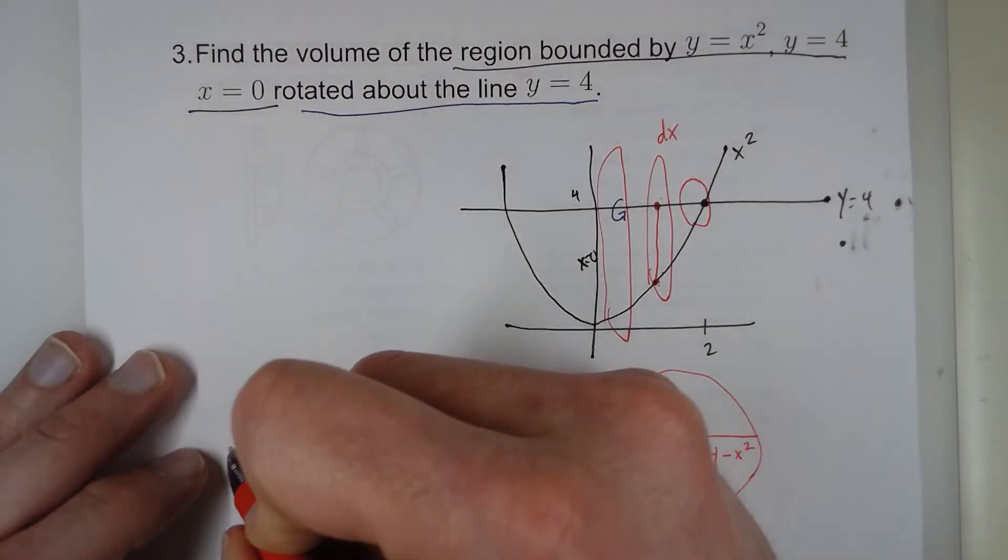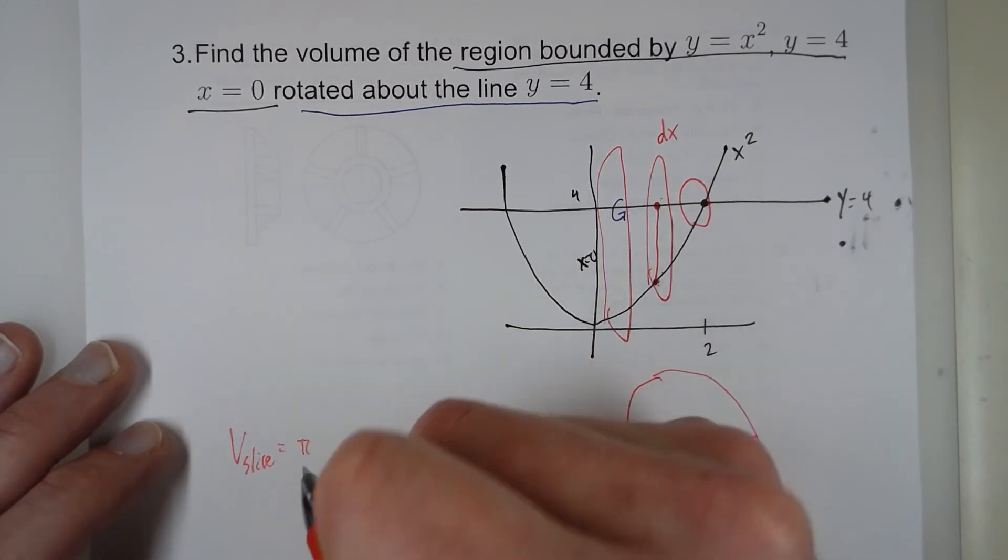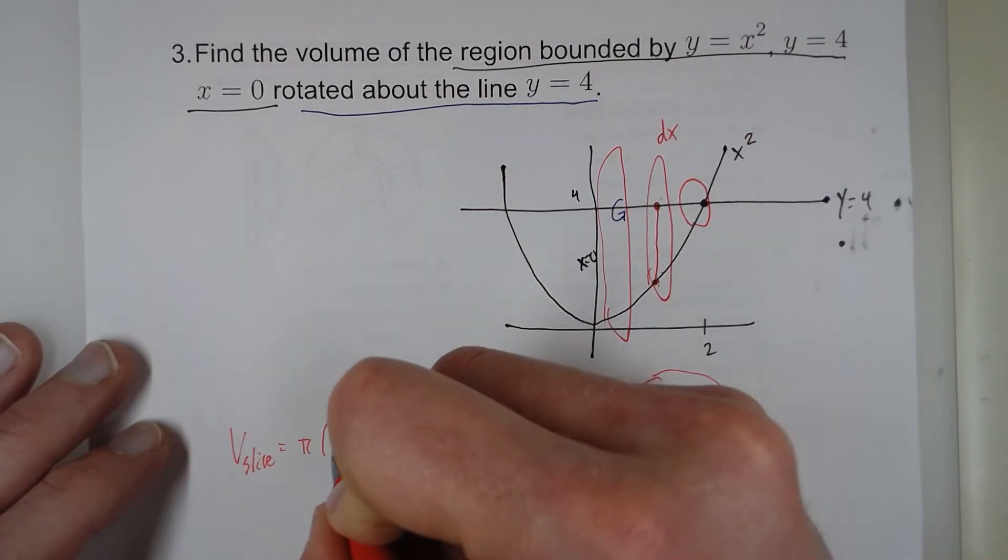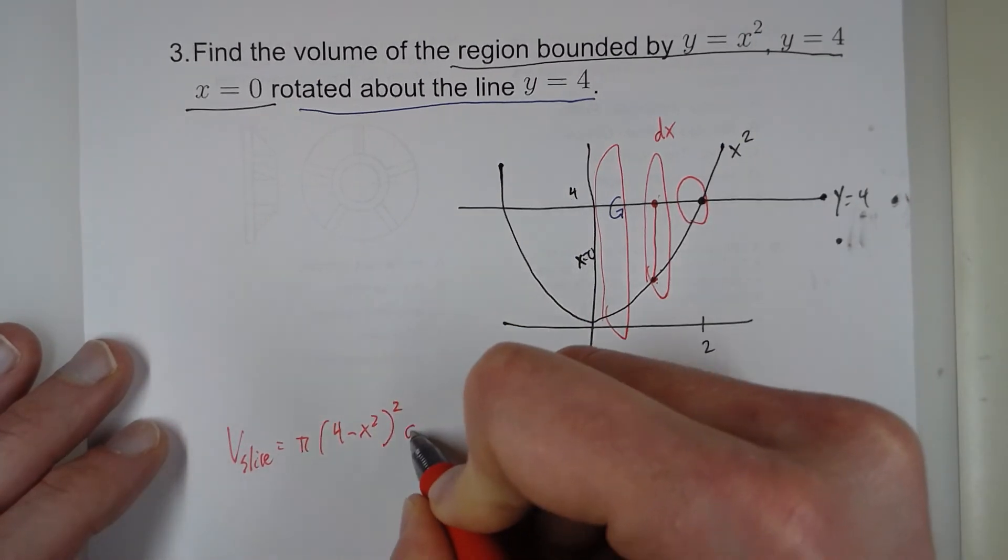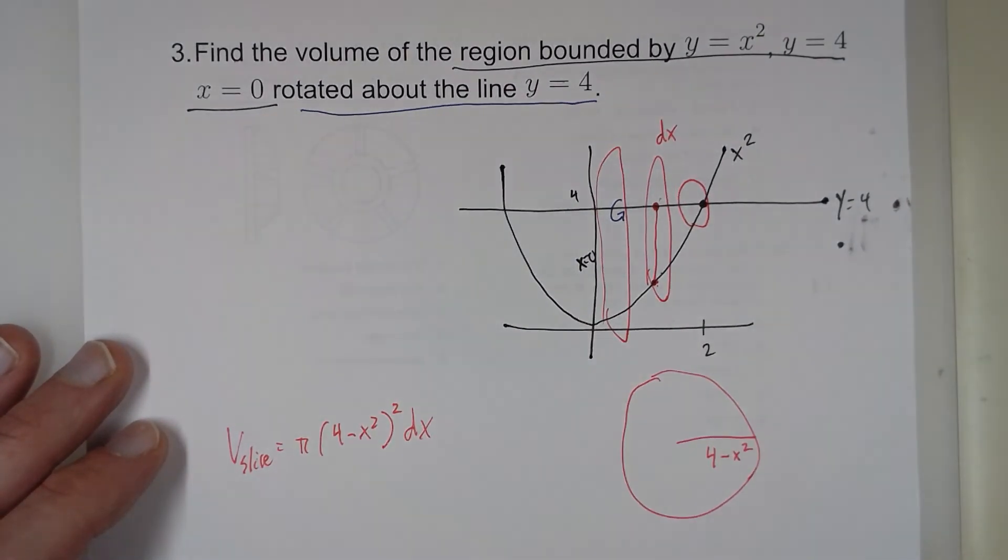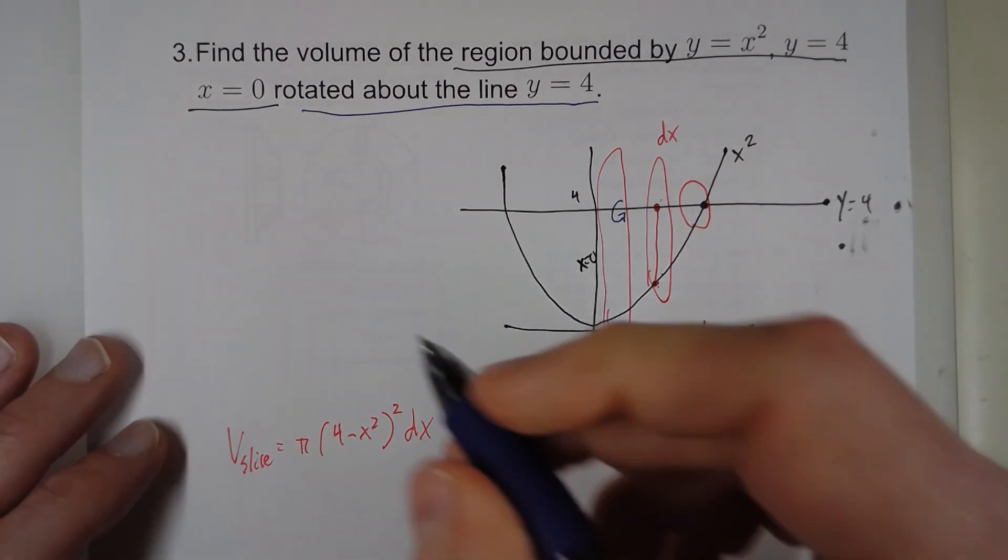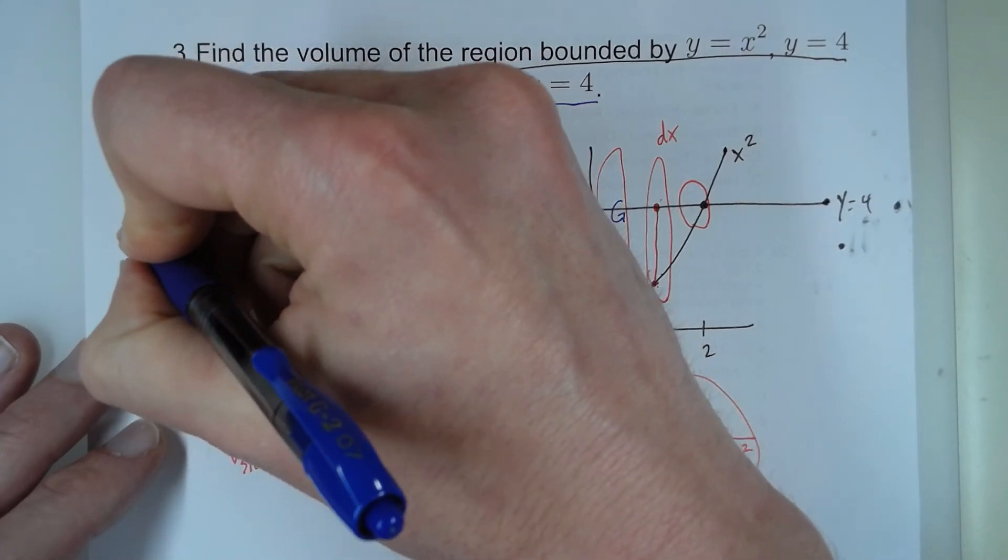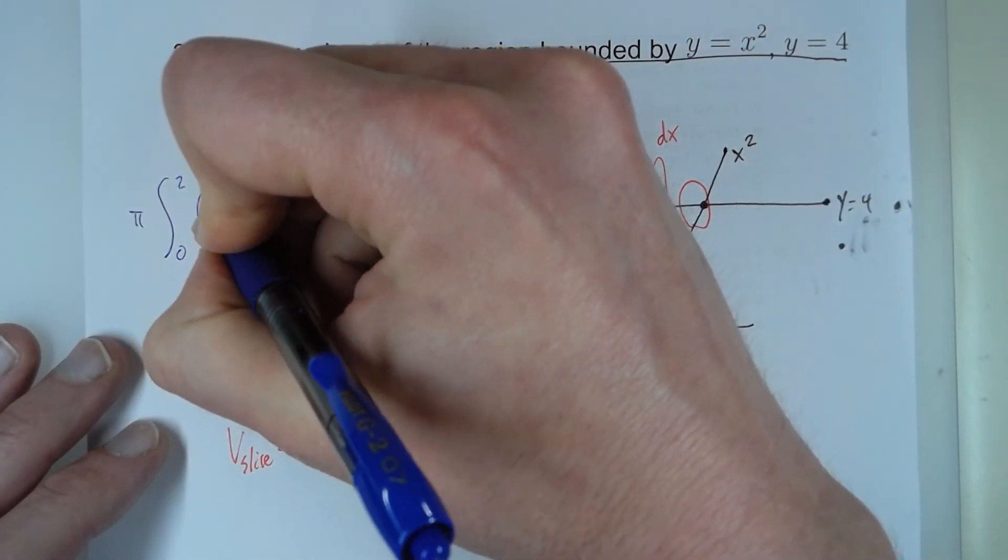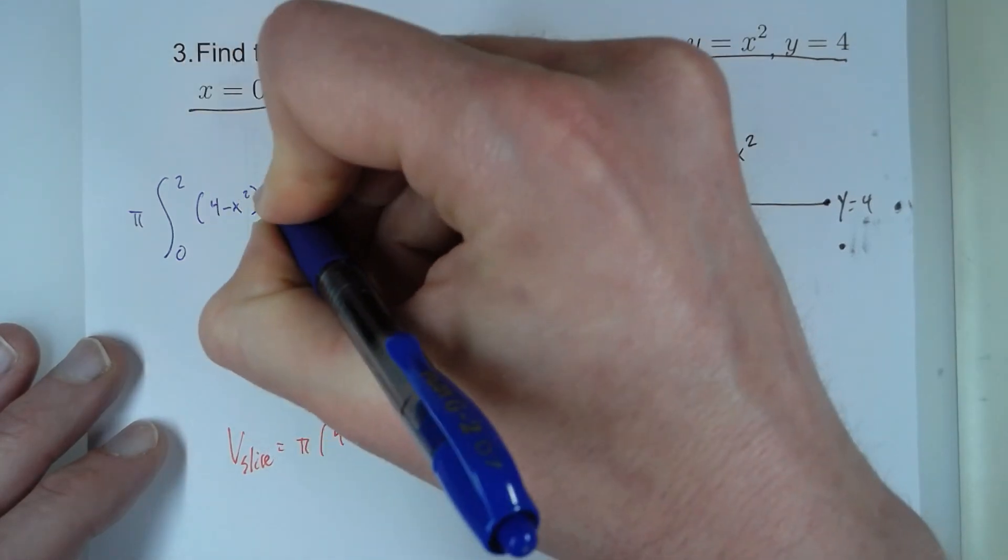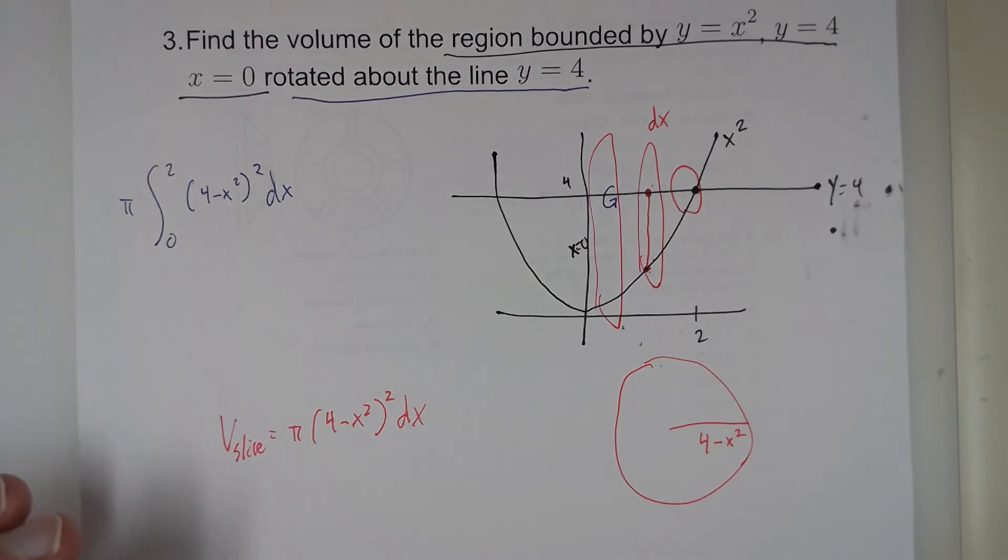So the volume of this slice is, it's a full circle, so it's pi. Now we have the radius, 4 minus x squared, squared, and the thickness is still dx. And we're adding up all these slices from when x is 0 to when x is 2. So from 0 to 2, of 4 minus x squared, squared, dx. And there is our integral.